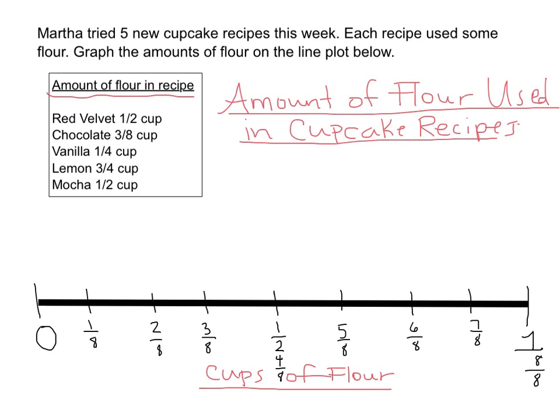Next step is to plot the data points on my line plot. Each of these data points is going to receive an X, and that's going to represent that it has been placed on the graph. I'm going to create an even-sized X for each of my five amounts of flour, starting with red velvet. That was 1/2, so I'm going to put an X there and check that off because it's a good strategy so I don't forget I already plotted it.